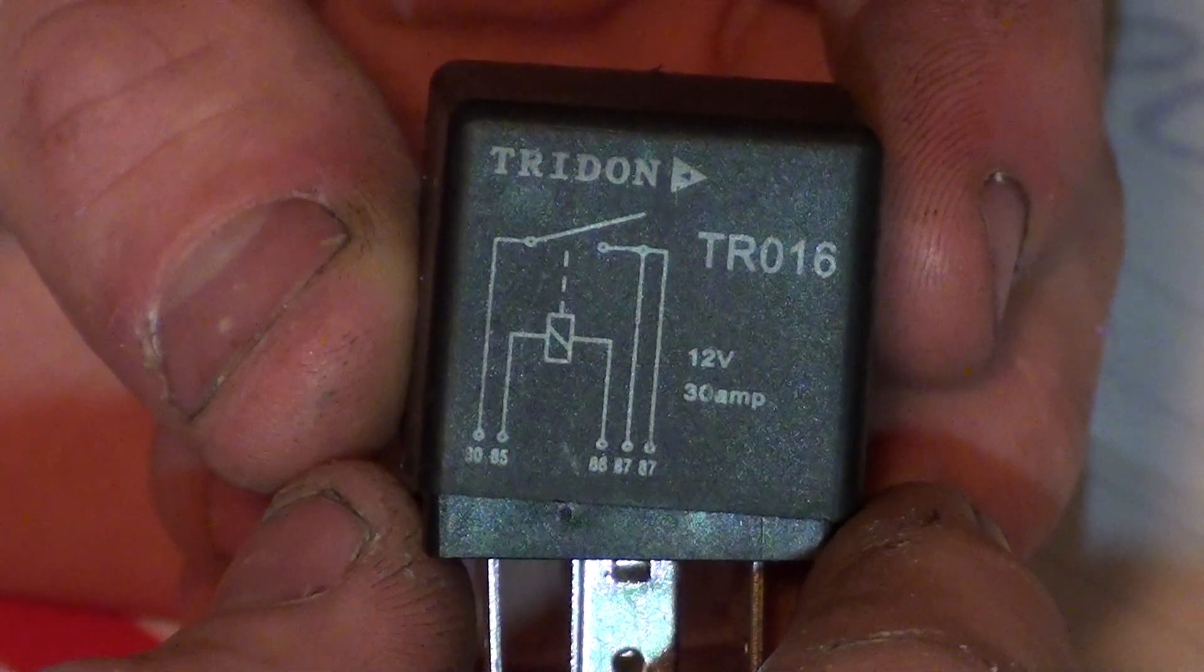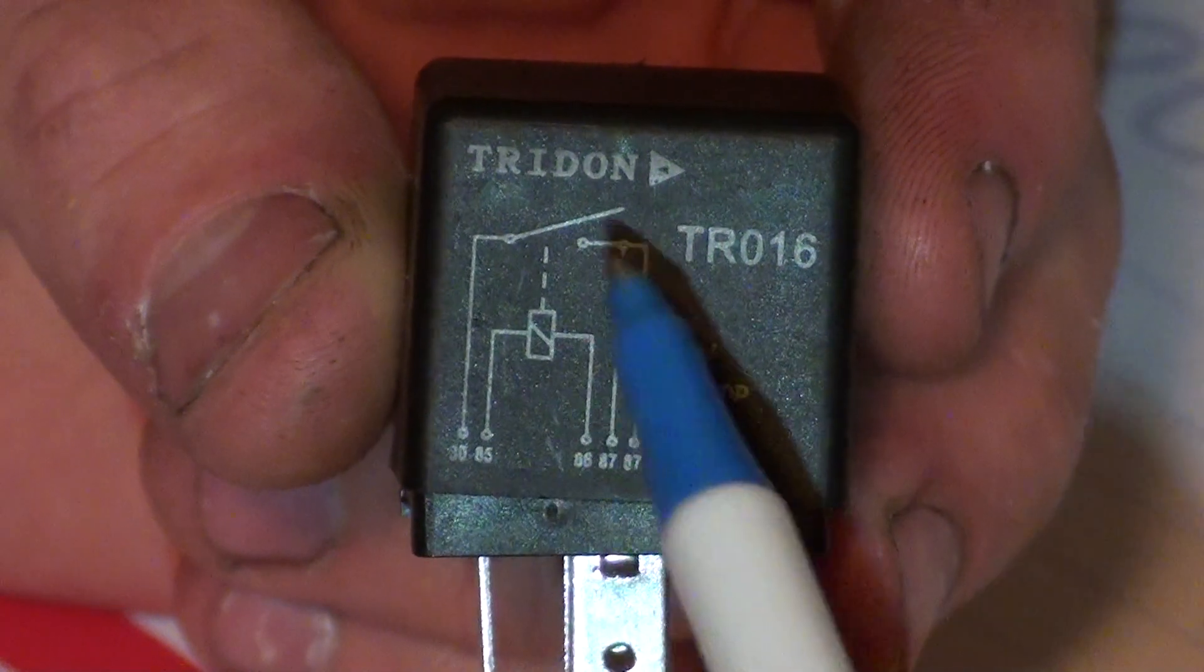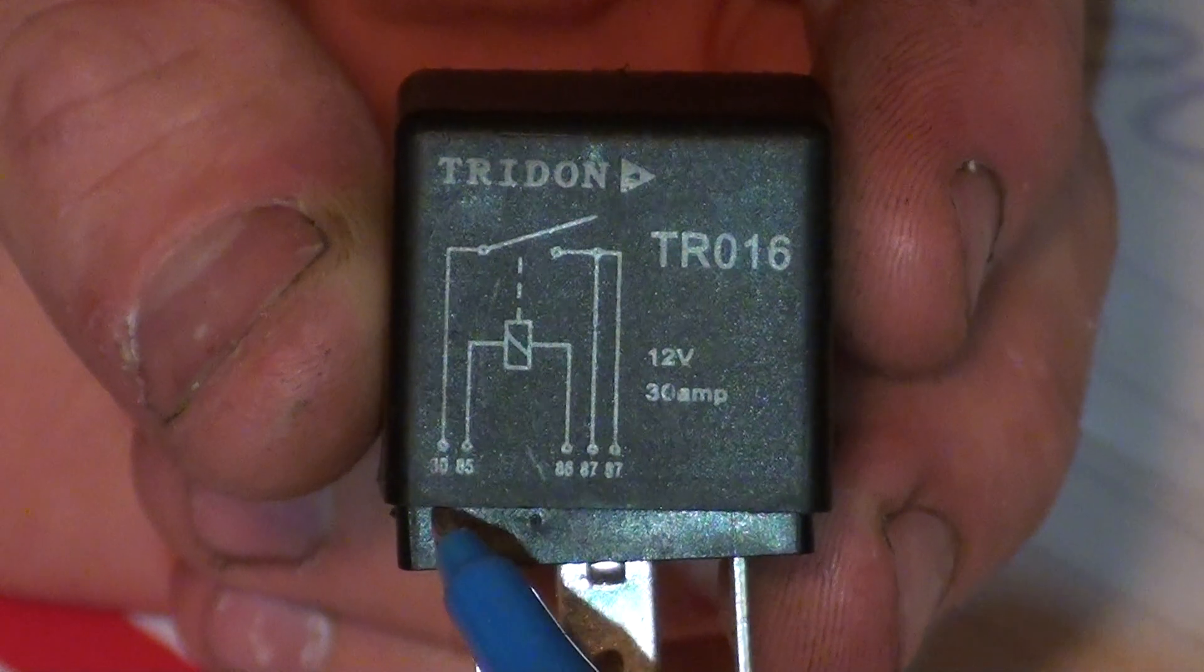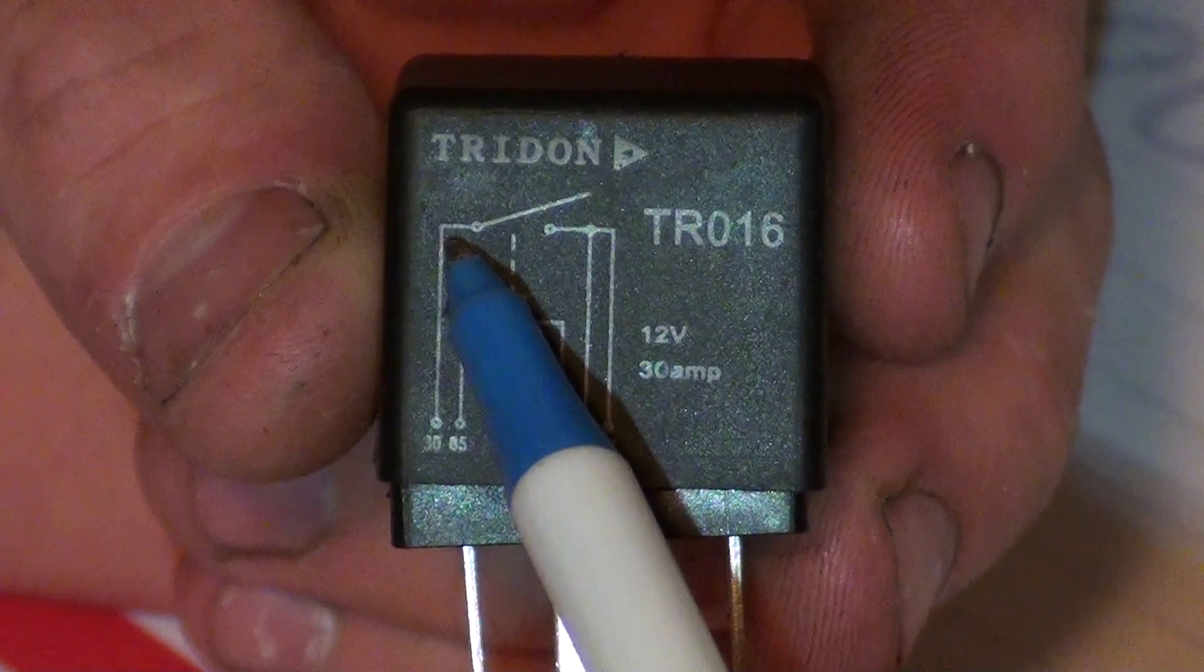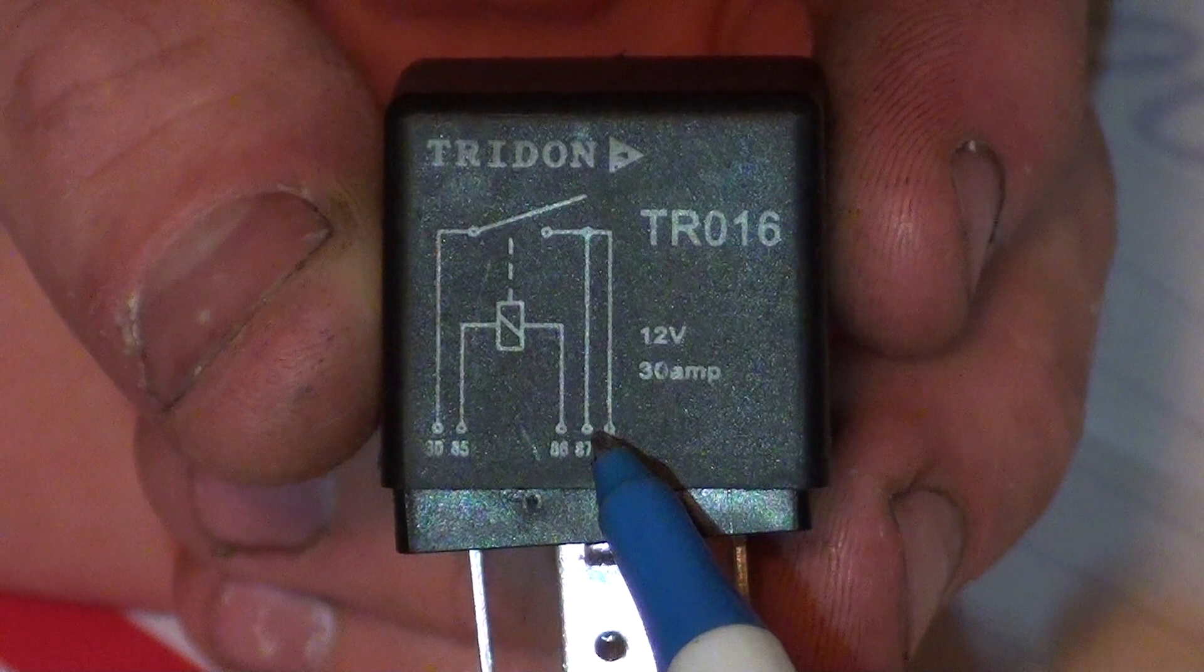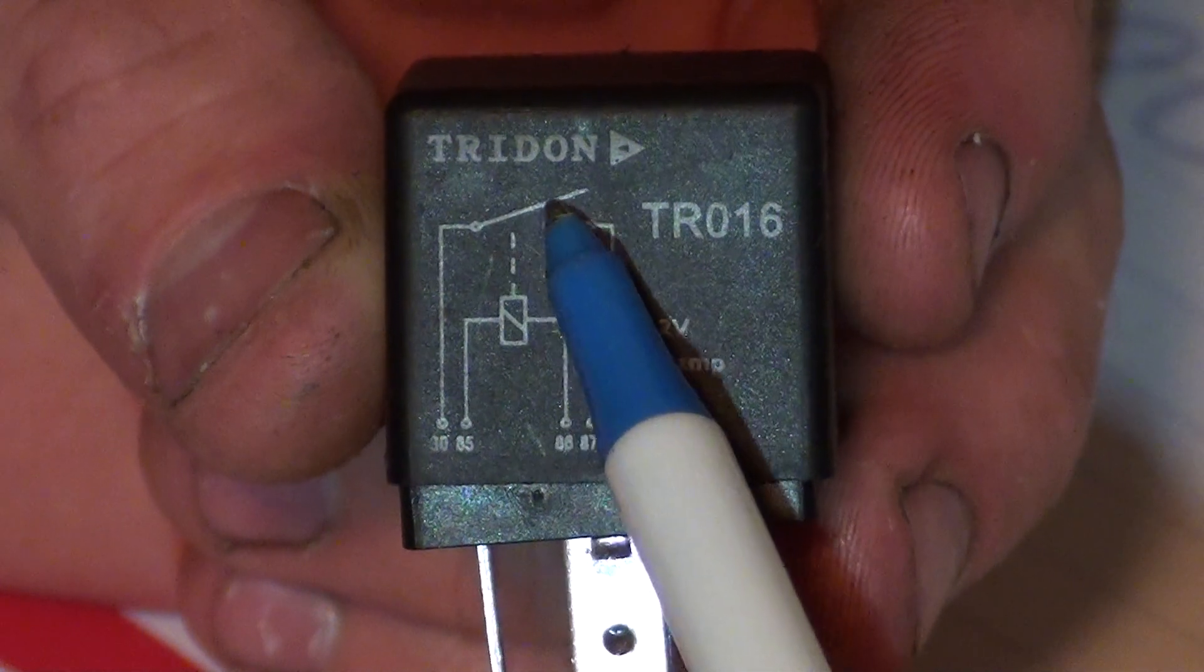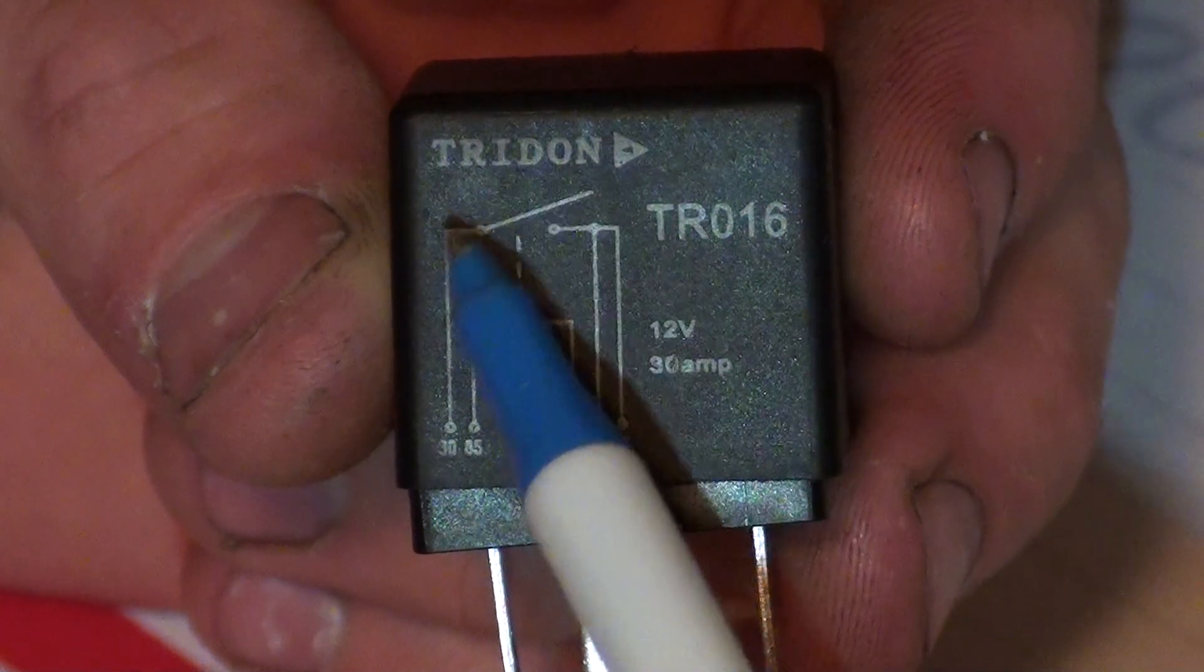Alright guys, so this is a normally open relay. All relays have a little diagram on it, like this one here. You'll be able to see or determine which sort of relay it is by looking at the diagram. So you can see here, we've got terminal 30 coming up to a switch and then going over to 87, which is the item that we're supplying power. You can see here that the switch in the diagram is open. So that means that this is a normally open relay.